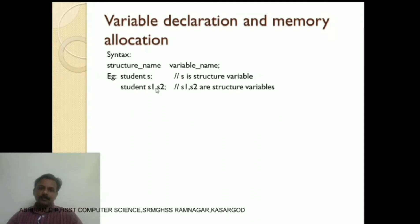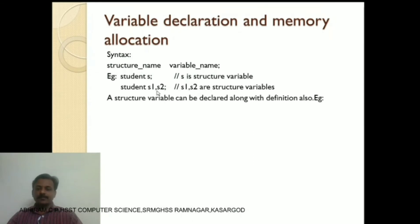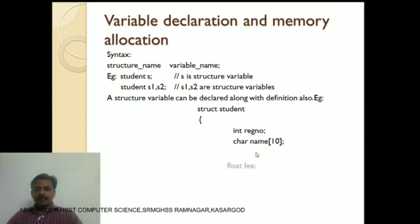This is one method for variable declaration. A structure variable can also be declared along with the definition. For example: struct student { int register_number; char name; float fee; } s; Here s is the structure variable declared along with the structure definition. This is the second method. We can use both methods for variable declaration.